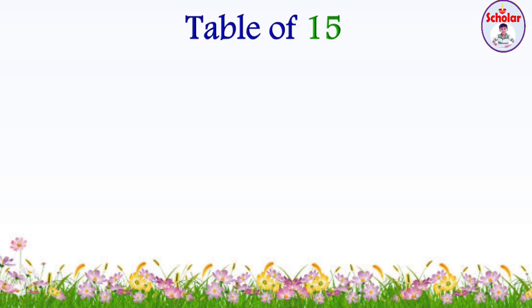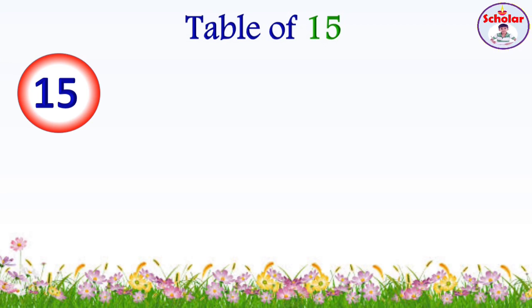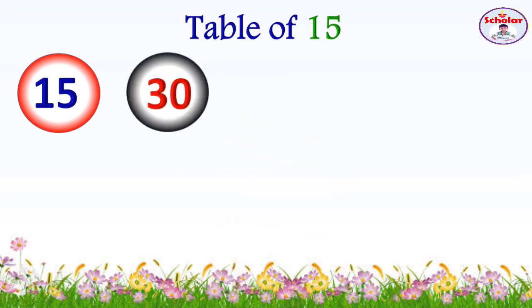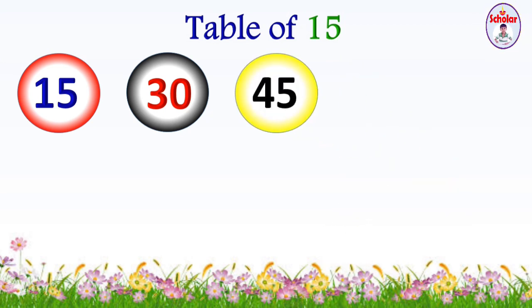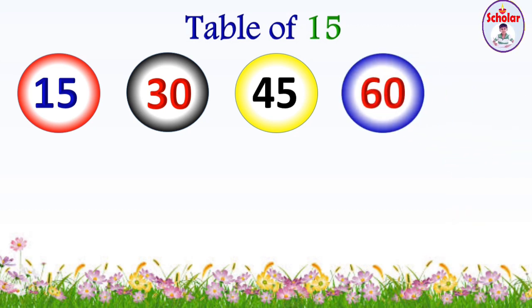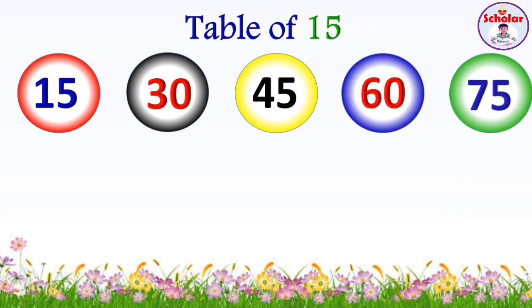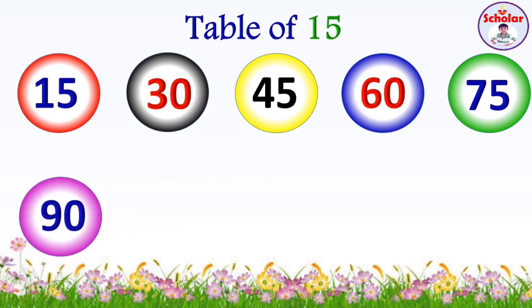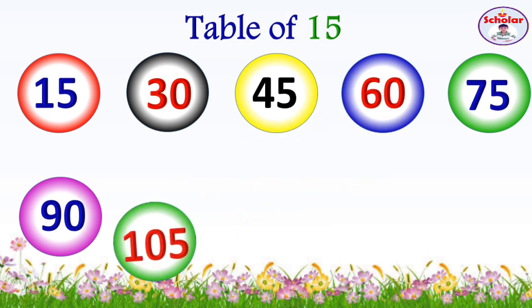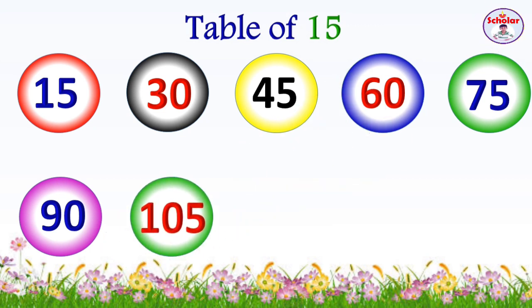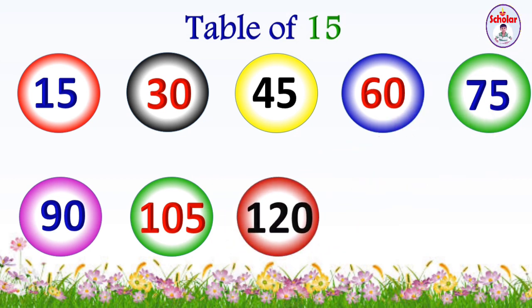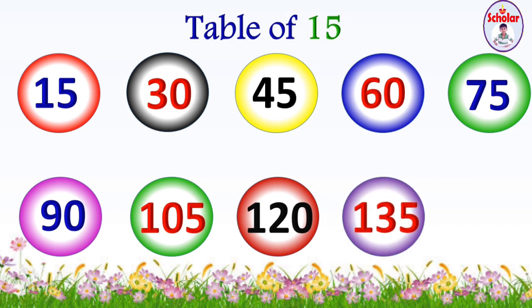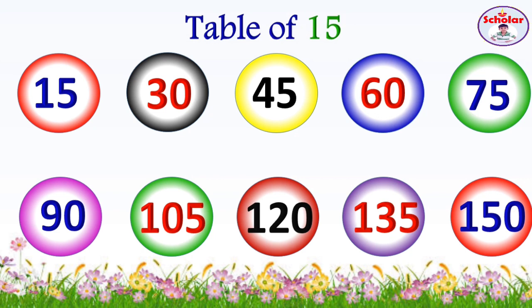Table of 15: 15×1=15, 15×2=30, 15×3=45, 15×4=60, 15×5=75, 15×6=90, 15×7=105, 15×8=120, 15×9=135, 15×10=150.